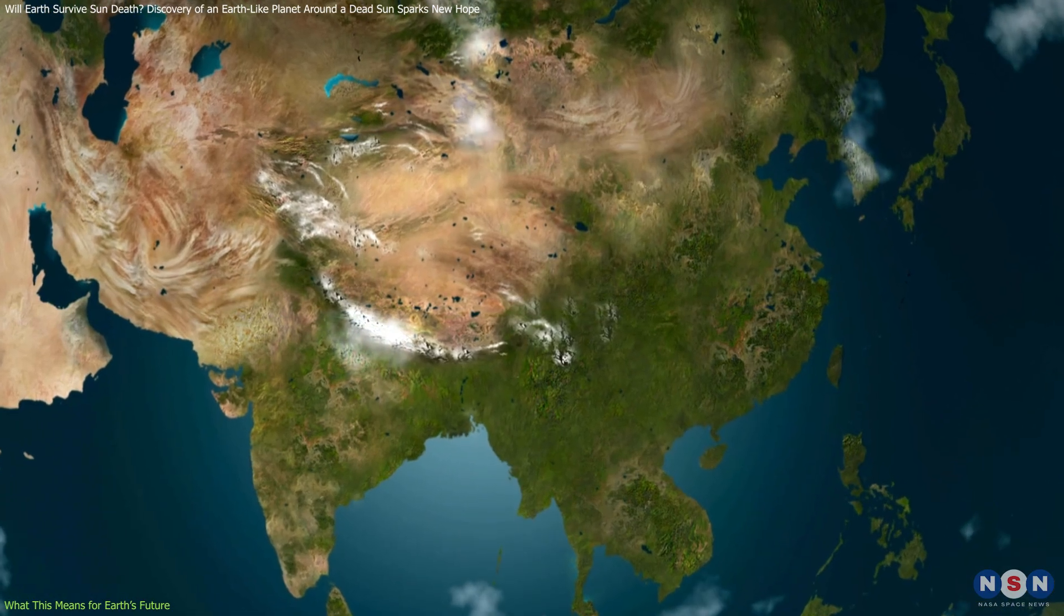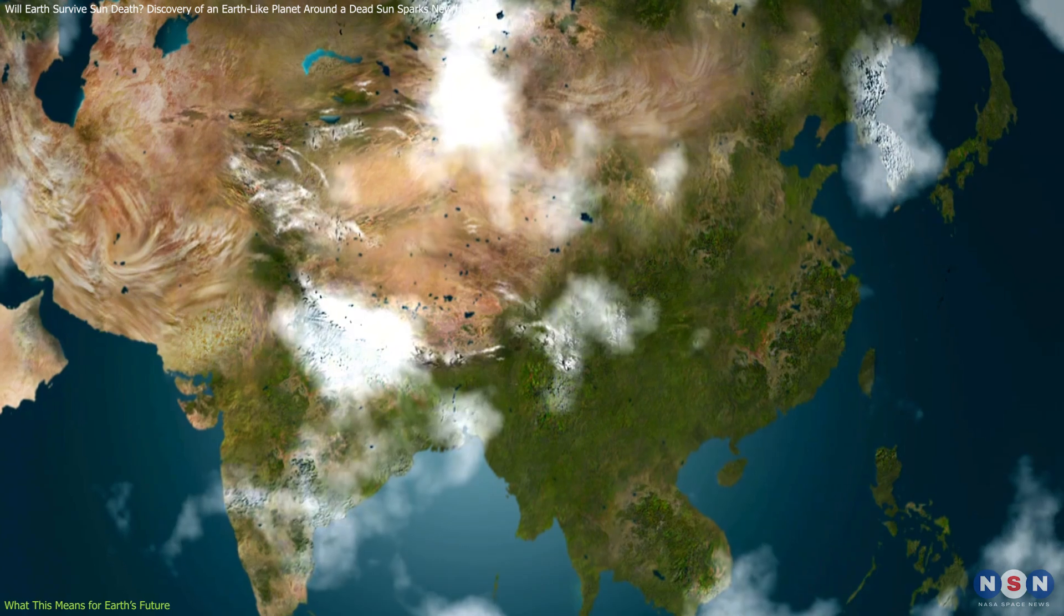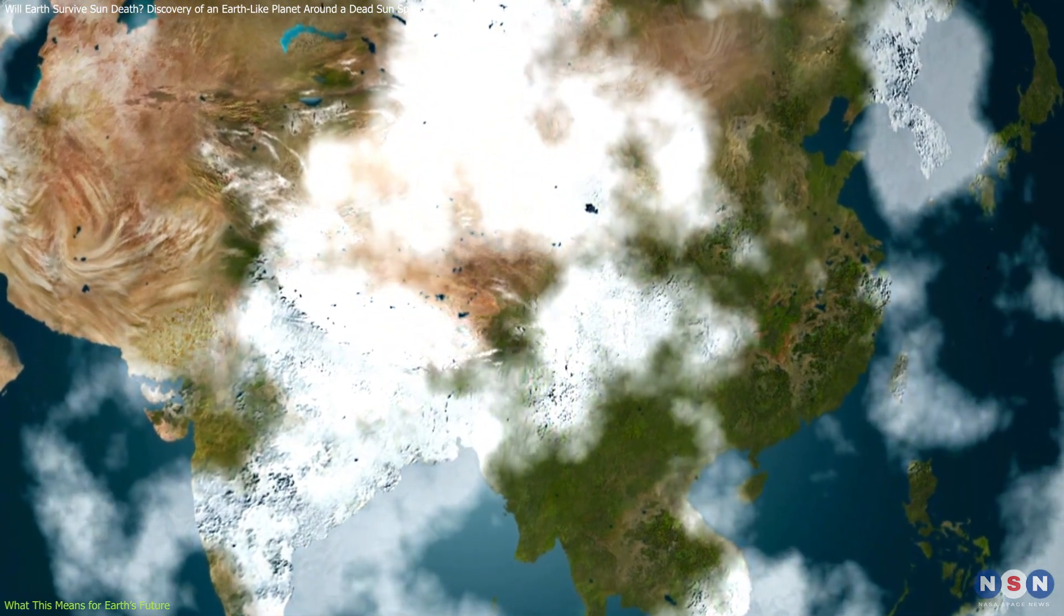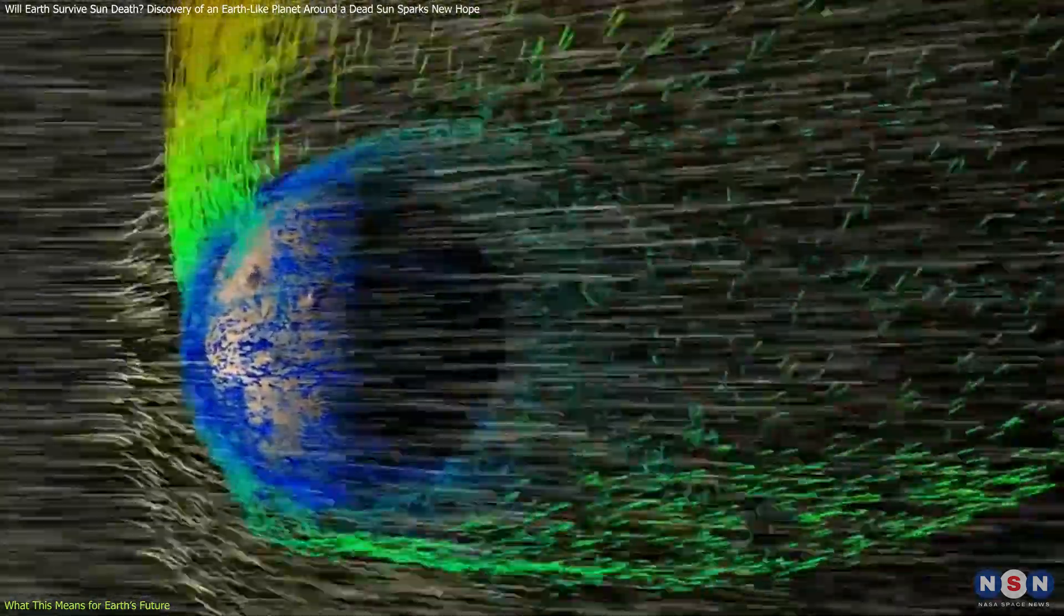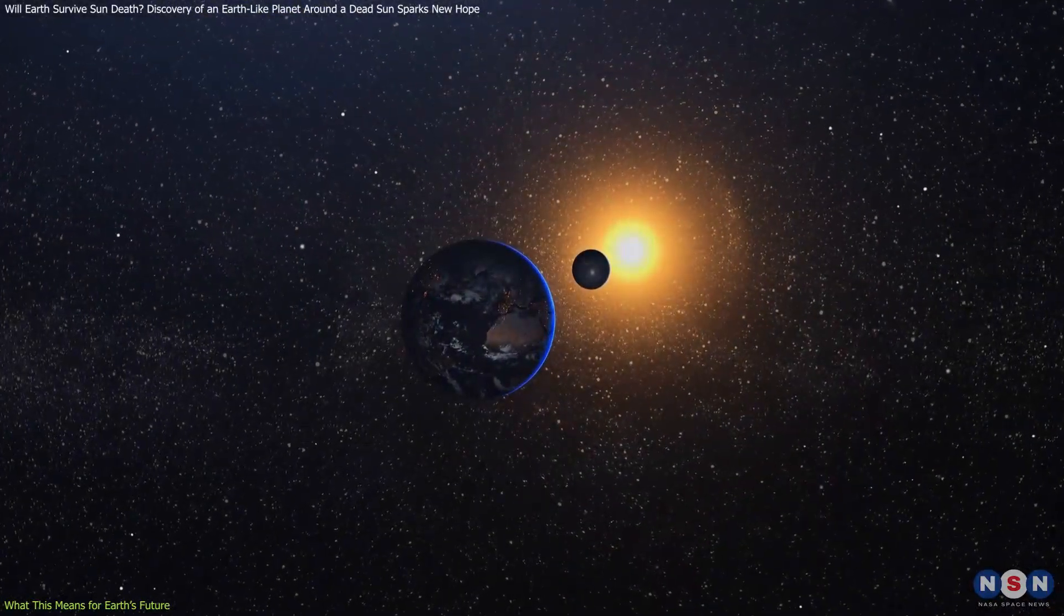However, in this distant orbit, Earth would likely become a frozen, desolate world, stripped of its atmosphere and water, far from the Sun's remaining warmth.